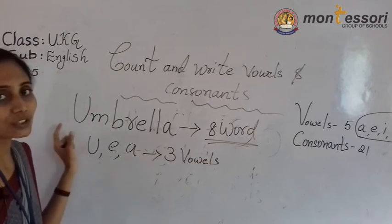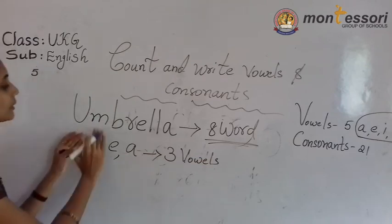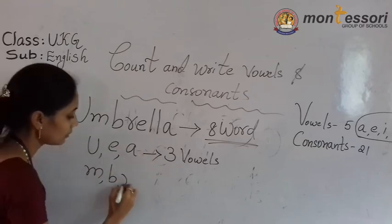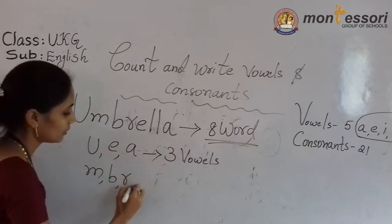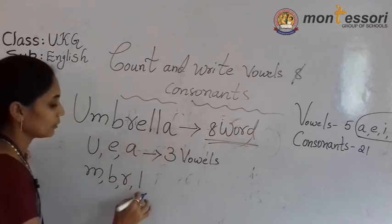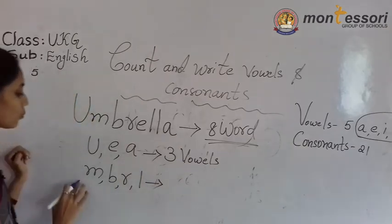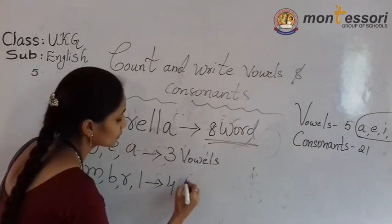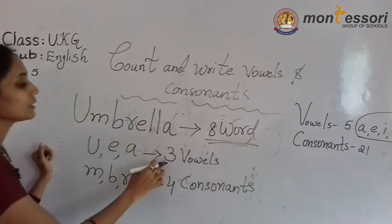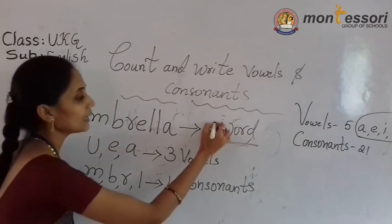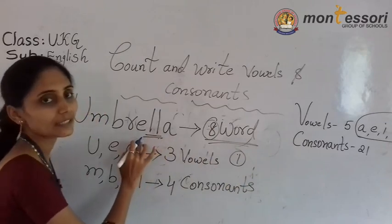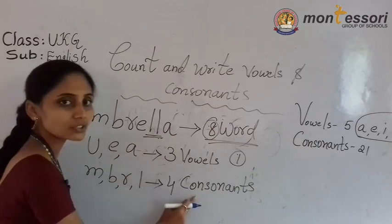Next, we will count the consonant letters. U — already vowel or consonant? Next, M. Next, B. Next, R. E — it comes under vowel. Next, L — L is repeated, count only one time. L. Next, A. 1, 2, 3, 4 — so how many consonants are there? 4 consonant letters. 3 vowels, 4 consonants — total 8-letter word. One letter is missing because it is a double — a repeated letter. So 3 vowels, 4 consonants.